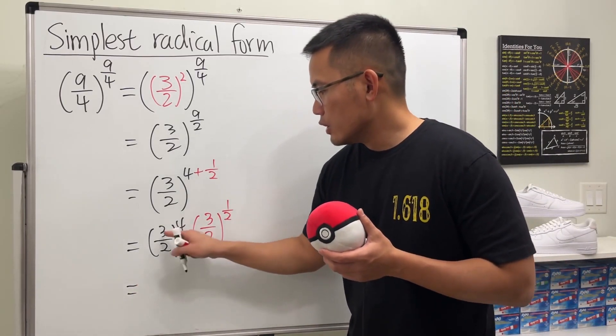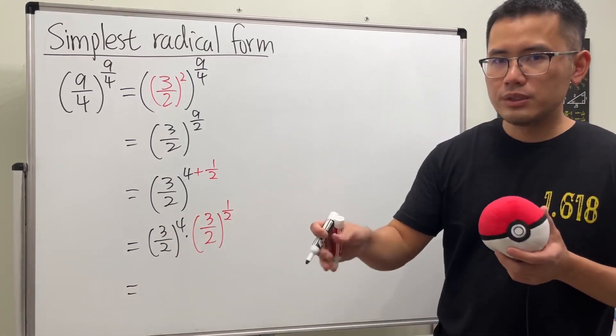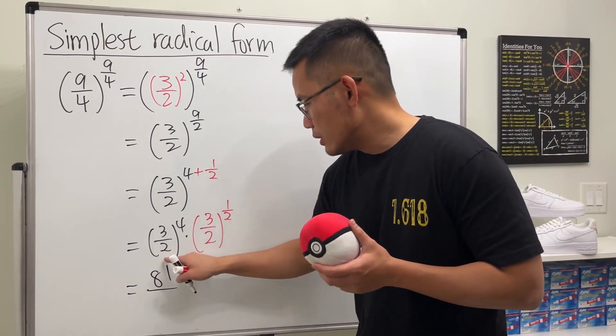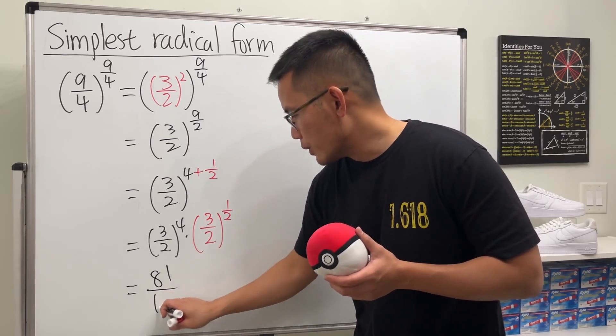Now work this out. 3 to the 4th power, 3 times 3 times 3 times 3. Work that out, we get 81. And then 2 to the 4th power, we will get 16.